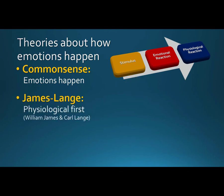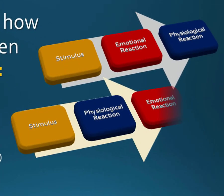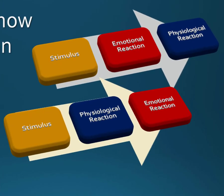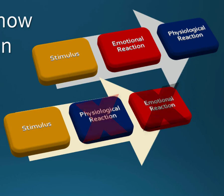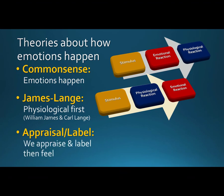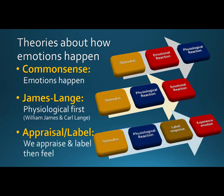The James-Lange approach reverses the last two steps. Now you meet someone new—the stimulus—which may cause you to blush and your heart to start pounding—a physiological reaction—which results in you feeling nervous and uncertain—your emotional reaction. In this theory, if there is no physical reaction to the stimulus, there would be no emotion. The third theory—the appraisal label approach—takes the James-Lange view and inserts an additional step between the physiological reaction and the emotional reaction.